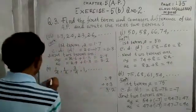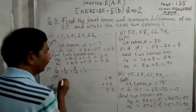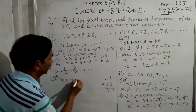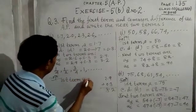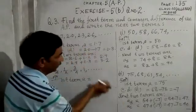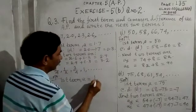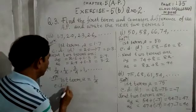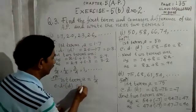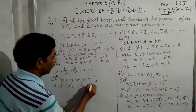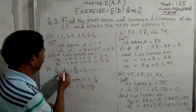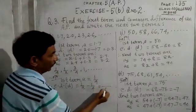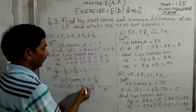Question 4: the first term A is equal to 1 by 4. The common difference D equals the second term 1 by 2 minus the first term 1 by 4. To subtract these fractions, we find the LCM of 2 and 4, which is 4.